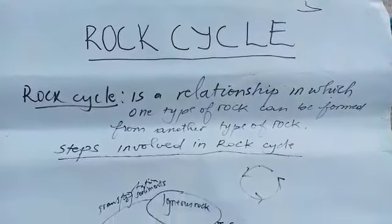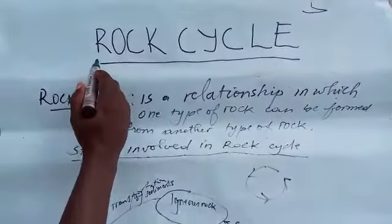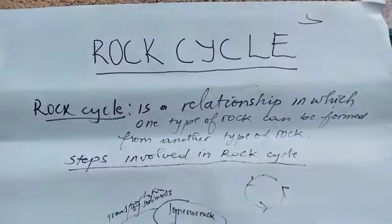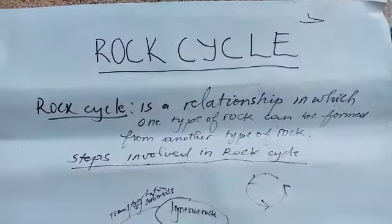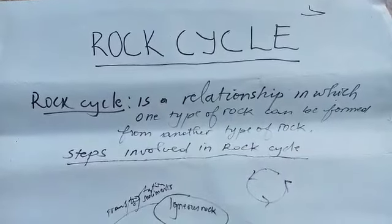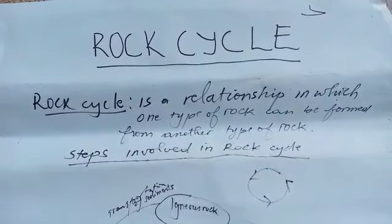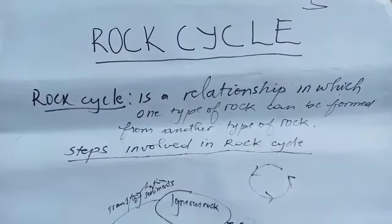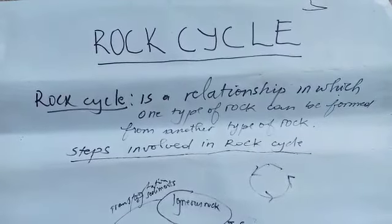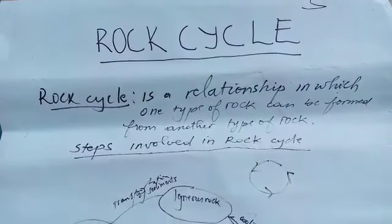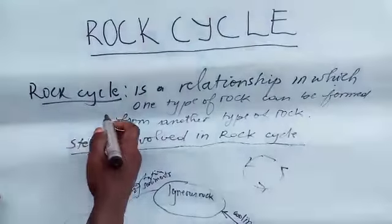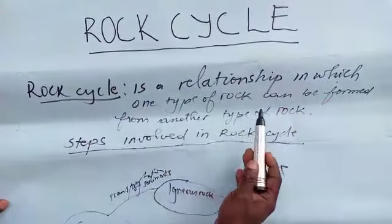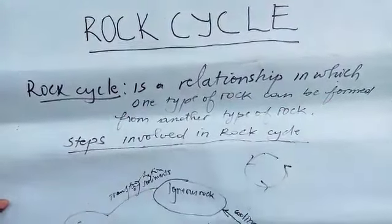Today we are going to discuss about the rock cycle. What do you understand by the term rock cycle? Very many times you hear the word rock cycle but you sometimes get confused about its meaning. So I'm here as a solution to help you understand that term. When you talk of a rock cycle, it is a relationship in which one type of rock can be formed from another type of rock.